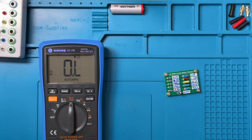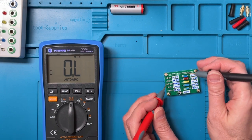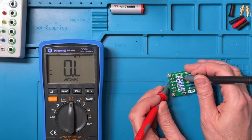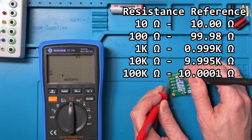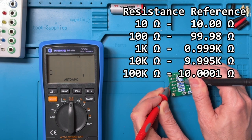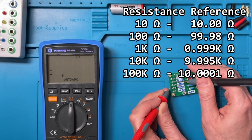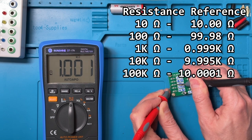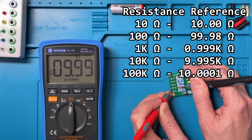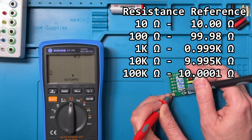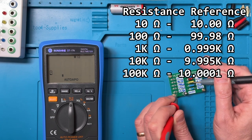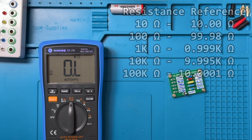For resistance, I've got a reference board here and the actual values are going to be in the overlay, but I'll call them out as I'm doing them here. So this is 10 ohms, 100 ohms, 1k, 10k, and 100k. So all in all, pretty close, good readings, good performance there.